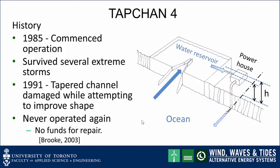Tapchan commenced operation in 1985 and survived a number of severe extreme storms. Unfortunately, in 1991, the tapered channel was accidentally damaged while attempting to improve its shape, and it never operated again due to a lack of funds for repair. So that's the extent of experience gained with Tapchan.